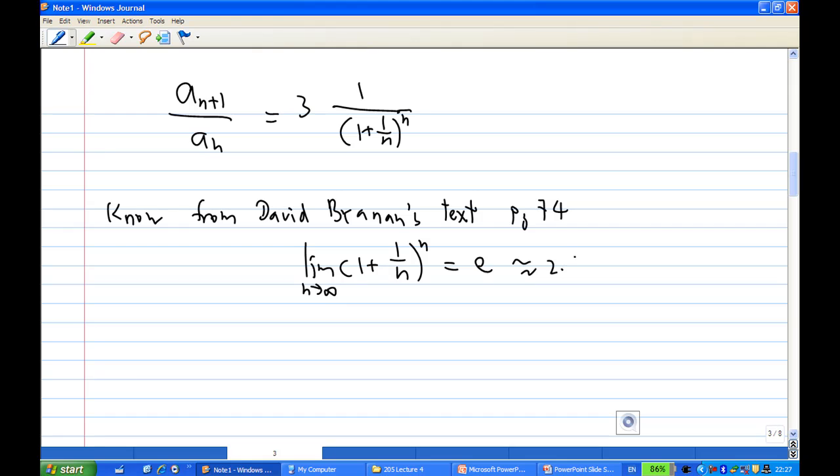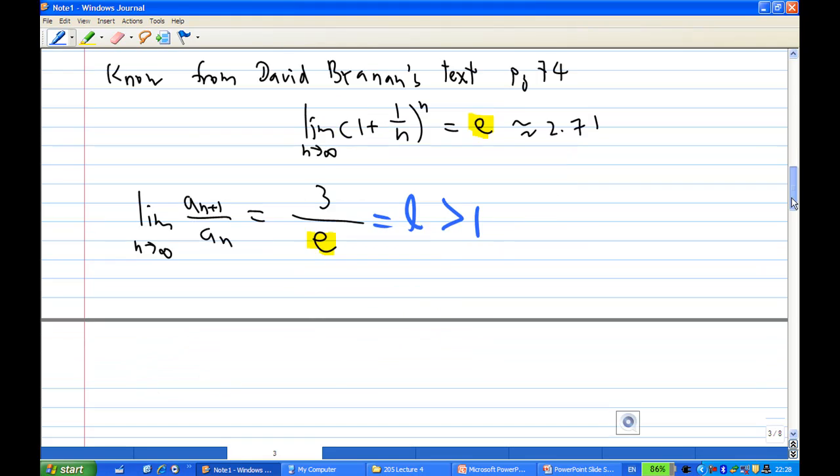So that means the limit as n goes to infinity of a n plus 1 over a n is equal to 3 over e. And since e is a number less than 3, this limit is called l, and this l happens to be greater than 1. Therefore by the ratio test, we conclude the series is diverging.